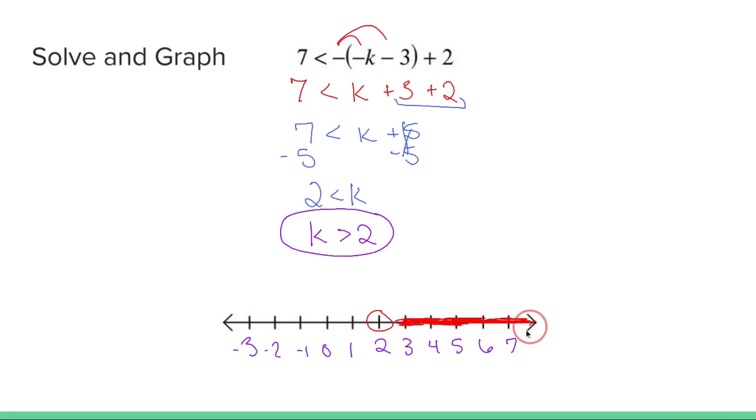And this graph now says that if I take any number greater than two, like five, like seven, like 7.5, like a billion, and plug it into the original equation, seven is going to be less than whatever number I choose. Okay, so there you have it. That's how you solve and graph an inequality.